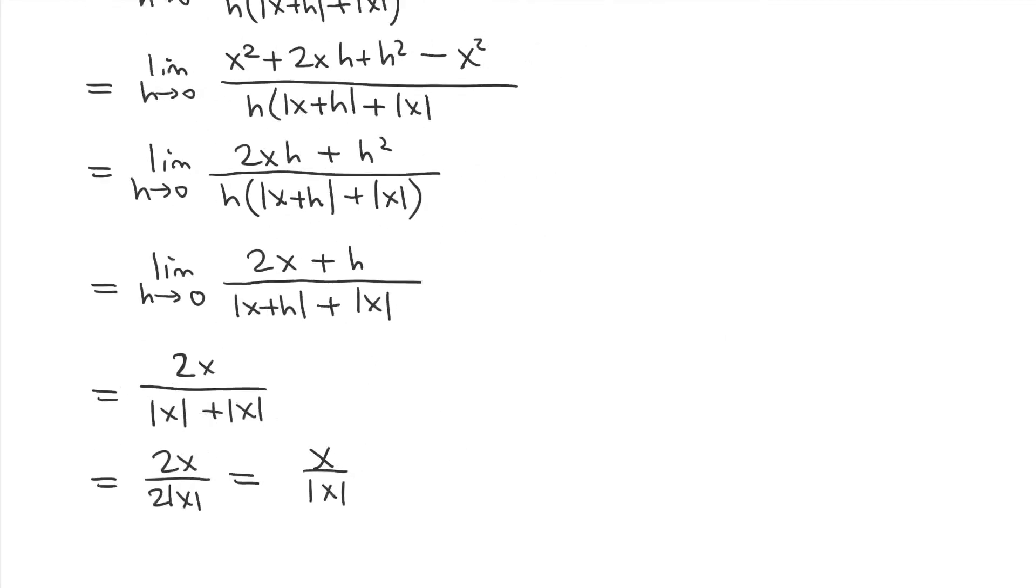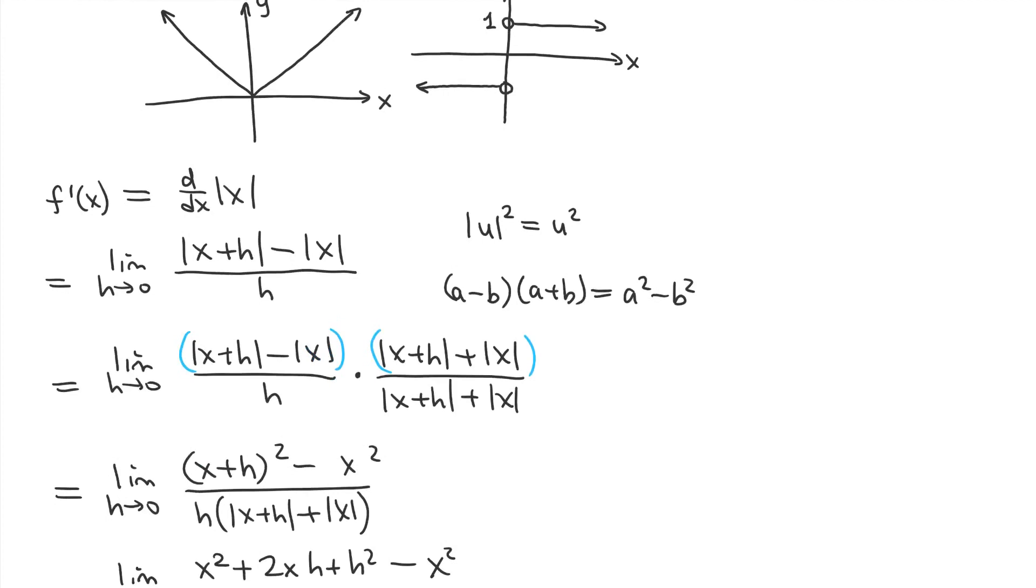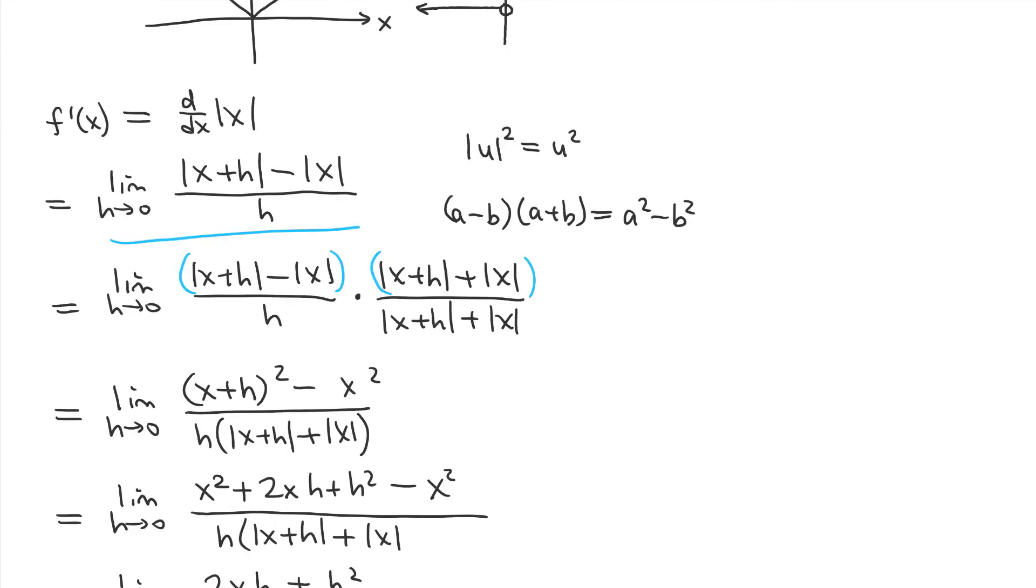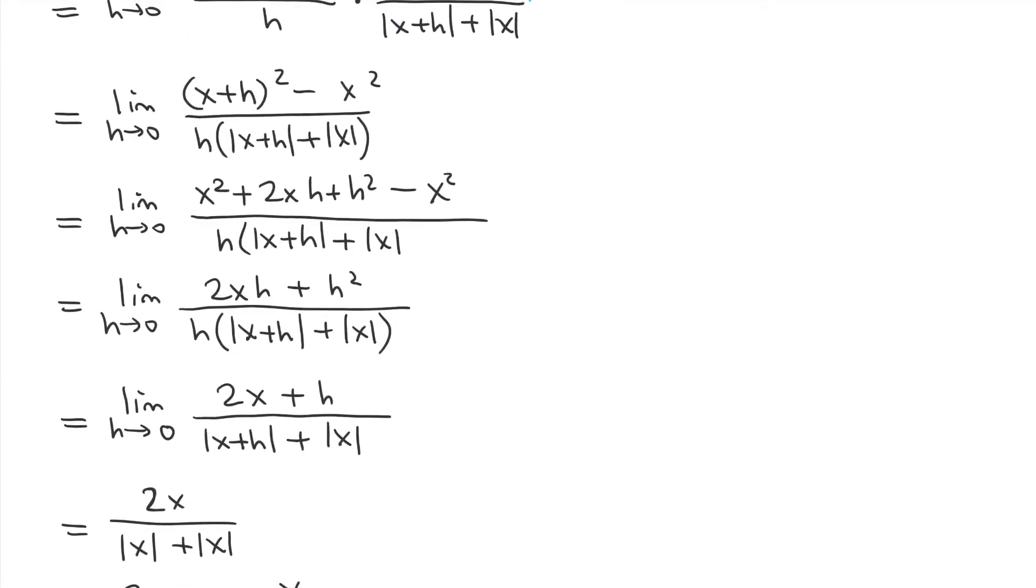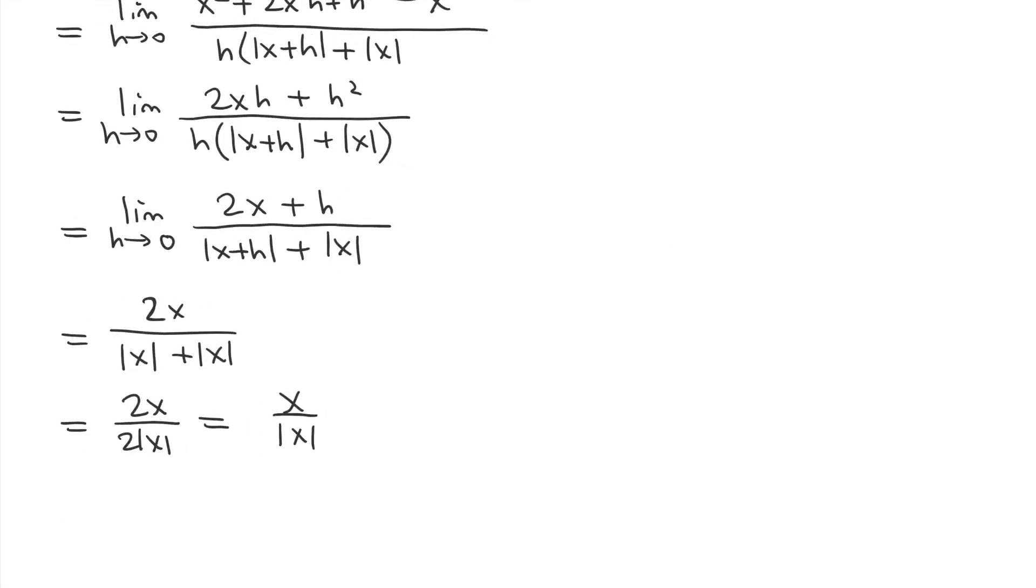Okay. So, let's just recap what we just did here. We use the limit definition of derivative. And we multiplied by what we call the conjugate of our numerator because when you square an absolute value, you can remove the absolute value sign. And then, we expanded the brackets, simplified using algebra, canceled out a factor of h in both the numerator and the denominator, and then finally plugged in h equals 0 and simplified.